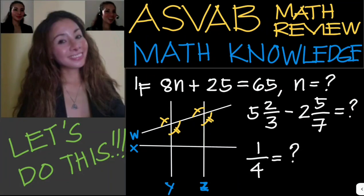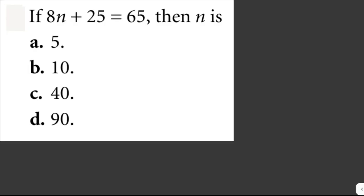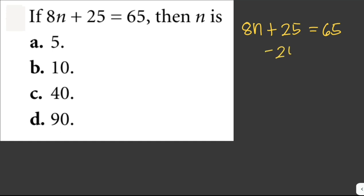Let's solve some problems. If 8n plus 25 equals 65, then n is what? To solve for n, we just subtract 25 from both sides. So we have 8n plus 25 equals 65, and subtracting 25 from both sides cancels it out, giving us 8n equals 65 minus 25.